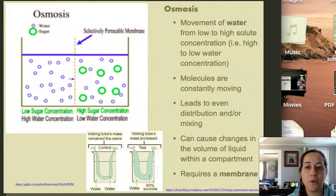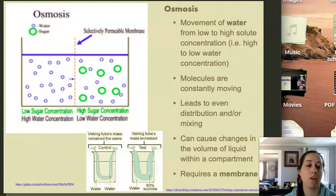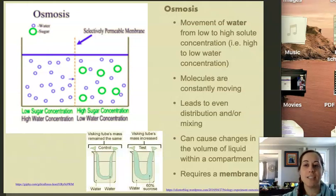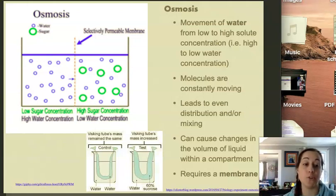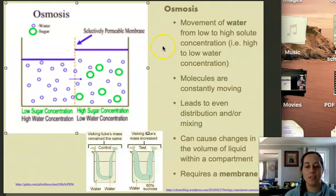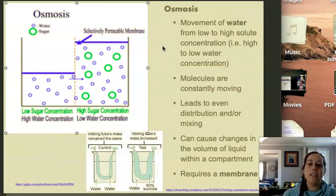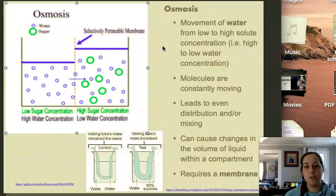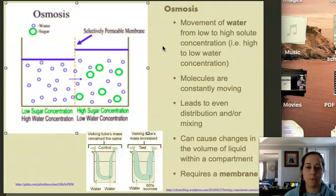In addition to diffusion, we also have osmosis. Osmosis is a description of molecules moving across a membrane specifically. In diffusion, we don't need a membrane. Osmosis is a specific type of diffusion that involves a membrane. Here we have a depiction of osmosis, which we'll just let go. And it is the movement of water across a membrane.